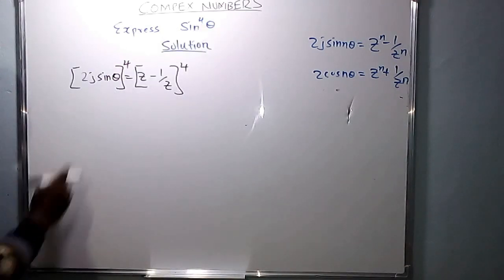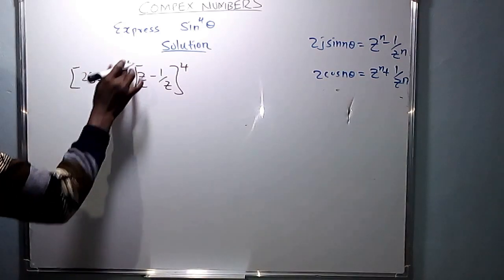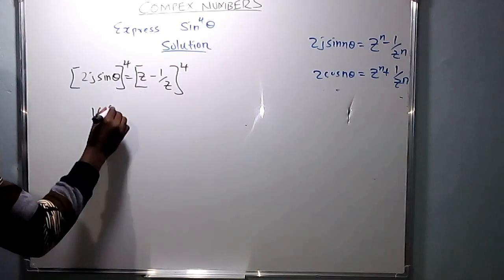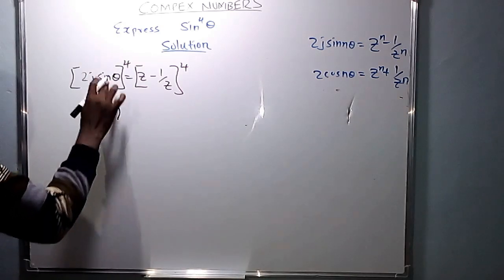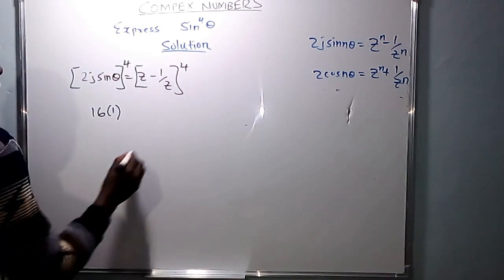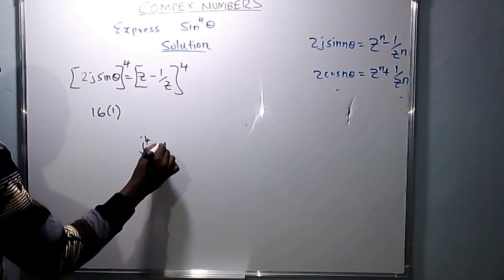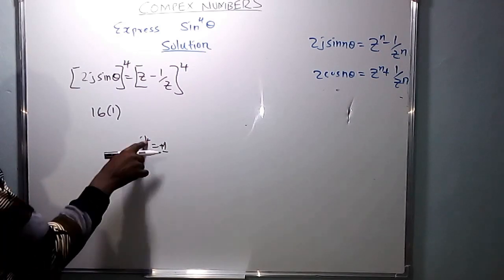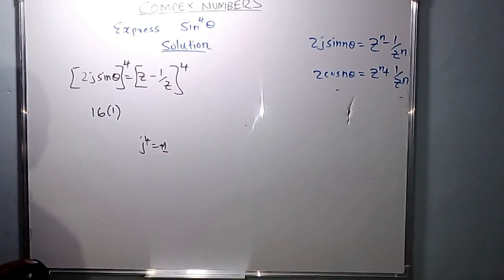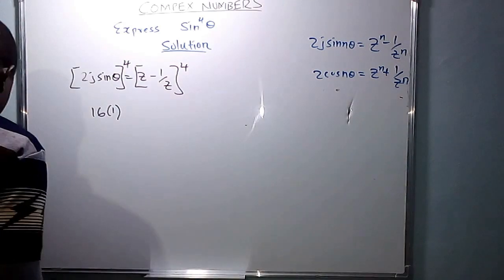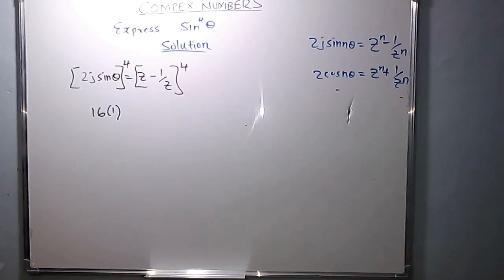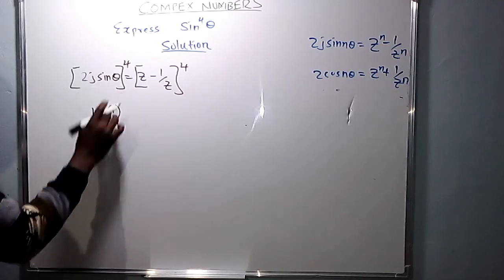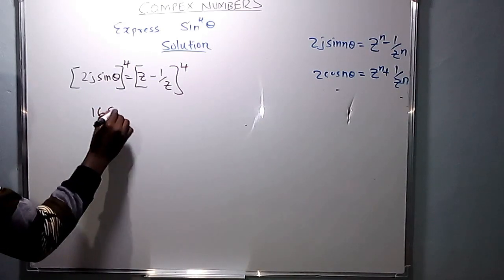So we raise both sides to power 4. 2 raised to the power 4 is 16. j raised to the power 4 is 1, because j squared is negative 1, so j raised to the power 4 is positive 1. So we have 16 sine raised to the power 4 theta on the left hand side. Now we simplify the right hand side.